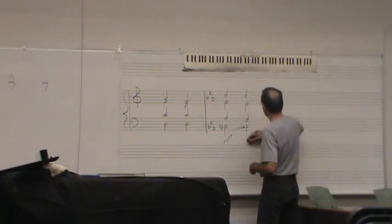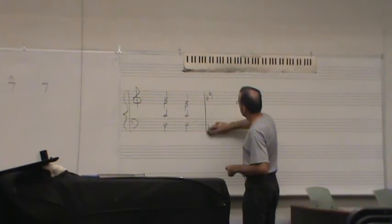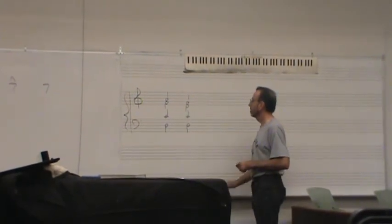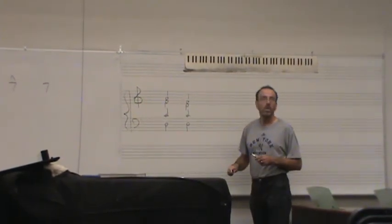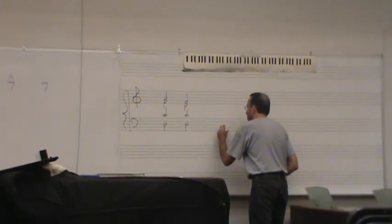Professor, if you have a 7th half diminished 6-5, usually resolves to a 1-6. Let me do that up here.